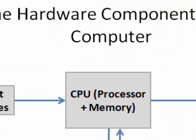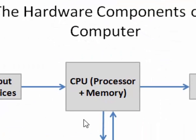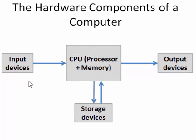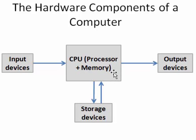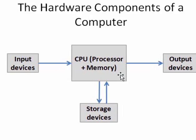So today we'll look at this one. There are four kinds of components in the computer system. But in this lesson we'll look at input, output and storage devices. And next lesson we'll look at the CPU, which is the processor and memory, how they work. Then you would understand how things work together in the computer.